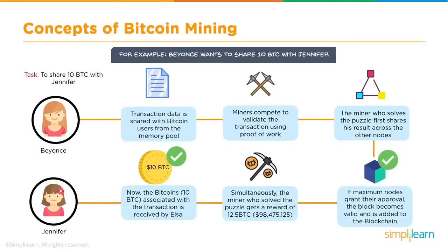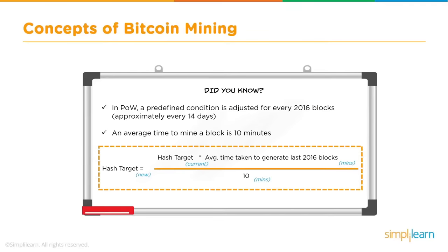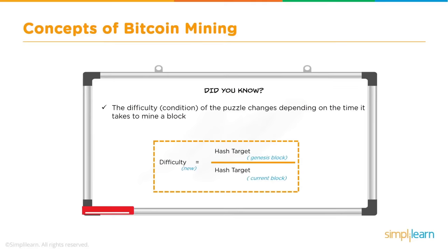In proof of work, a predefined condition called the target is adjusted every 2,016 blocks — approximately every 14 days. The average time to mine a block is 10 minutes. The target automatically adjusts itself to keep block generation within the 10-minute time frame. The difficulty of the puzzle changes depending on the time it takes to mine a block. Block difficulty is calculated as the hash target of the first block divided by the hash target of the current block, and it changes after every 2,016 blocks.